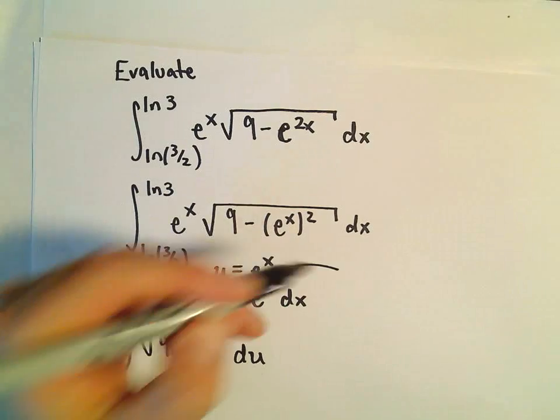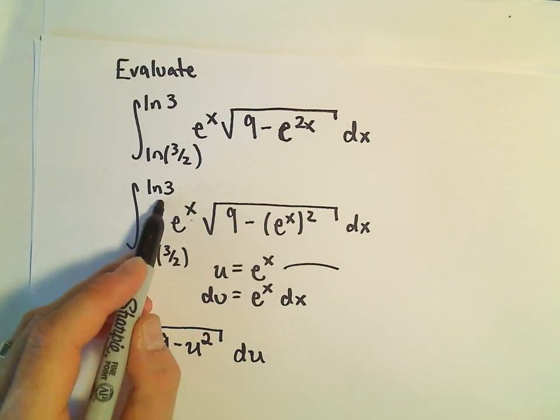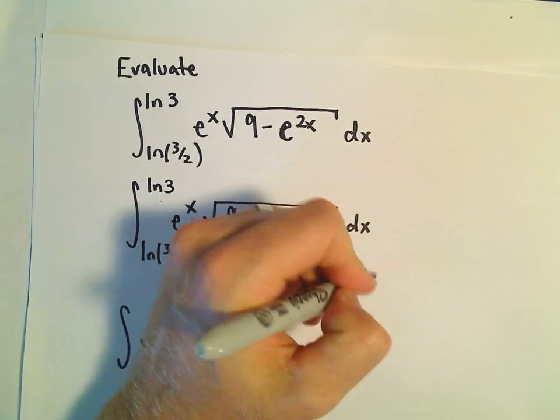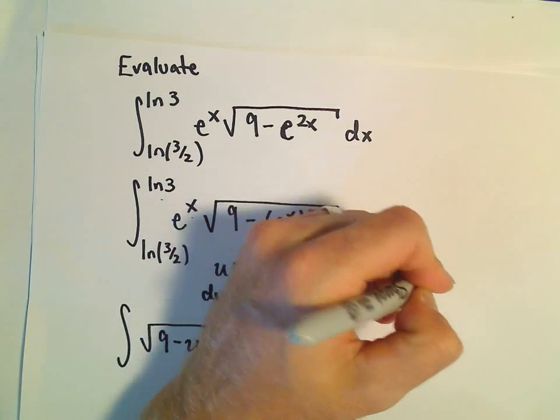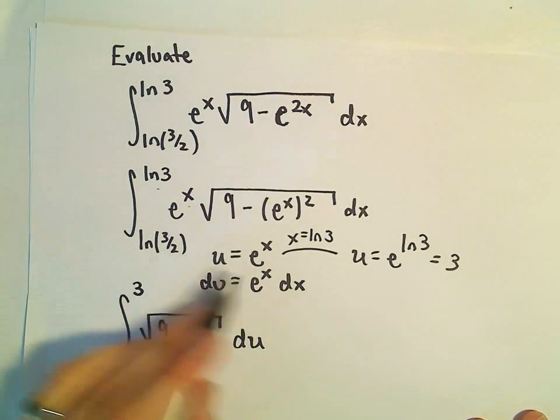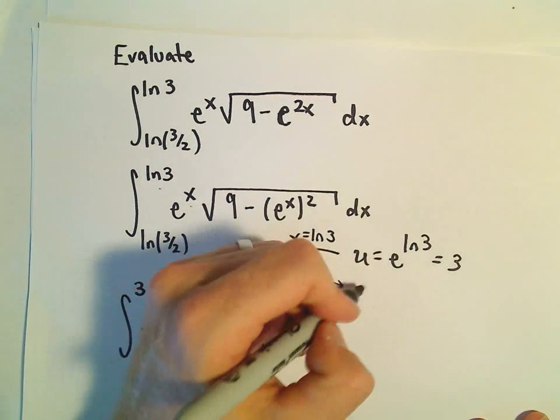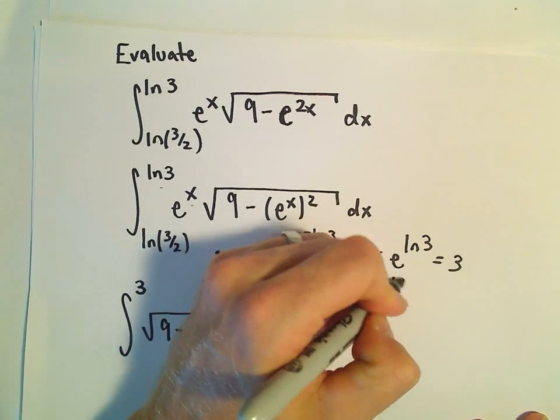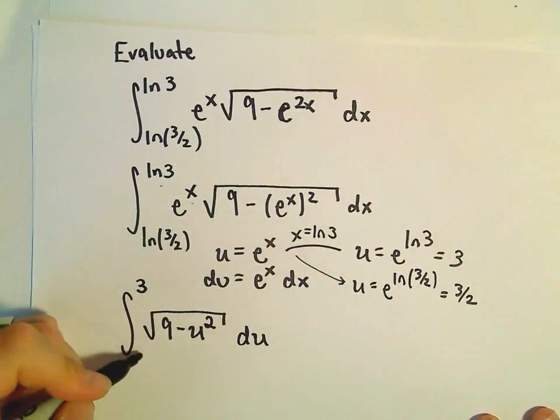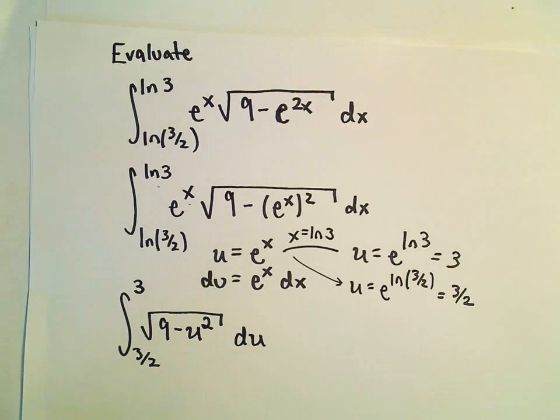To get our new limits of integration, when x equals ln of 3, we'll get u equals e to the ln of 3, which is just 3. And when we take e to the ln of 3 over 2, we just get 3 over 2. We've got our new limits of integration.